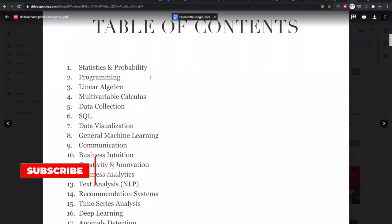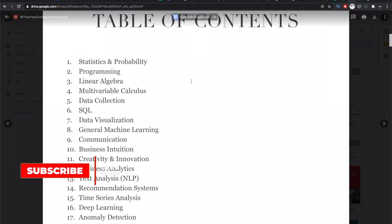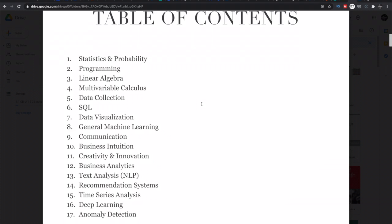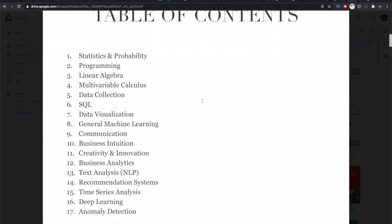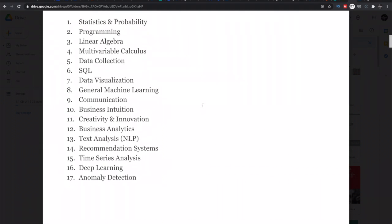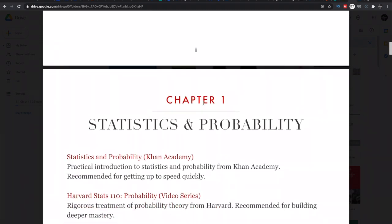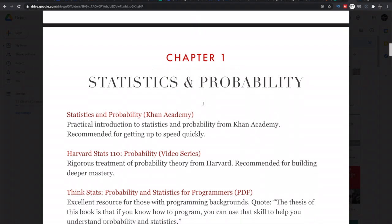If you see the table of contents, it contains all the concepts that are required to become a data scientist, especially statistics, programming, linear algebra, calculus, SQL, data visualization, machine learning, natural language processing, recommendation systems, time series analysis, and deep learning. So what else? Everything is in place. Let's look at Chapter 1: Statistics and Probability. If you see here, they've given the links. Just click on the link and it will take you to the page where you can get that knowledge.